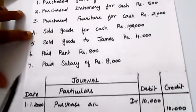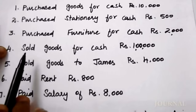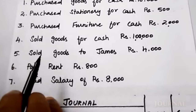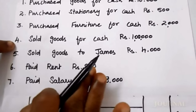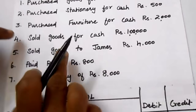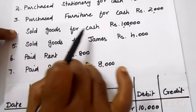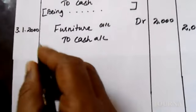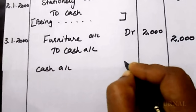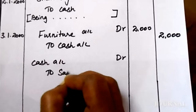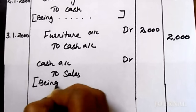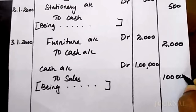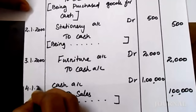Fourth transaction: sold goods for cash. Sales can be on two bases — cash basis or credit basis. If they mention a name without cash, it is considered credit sales. But here they have clearly given 'sold goods for cash,' so it is cash sales. Entry: cash account debit to sales. Being sold goods for cash — 1,00,000 rupees. On 4th January 2000.